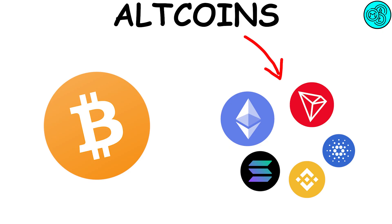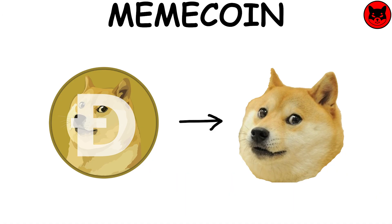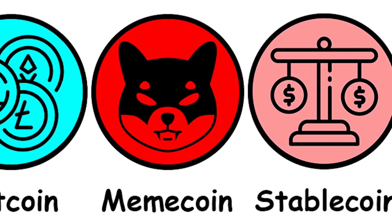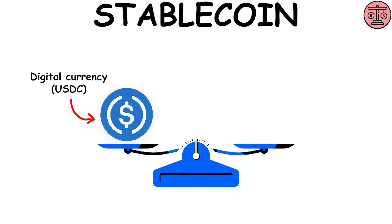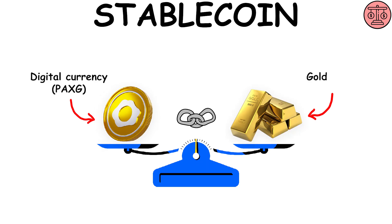Altcoins: an altcoin refers to a cryptocurrency other than Bitcoin. Memecoin: an altcoin based on a meme. Stablecoin: it is a digital currency pegged to a stable reserve asset such as the U.S. dollar or gold.